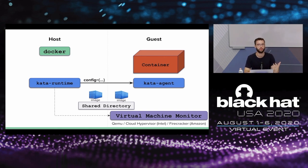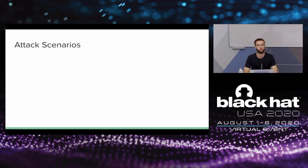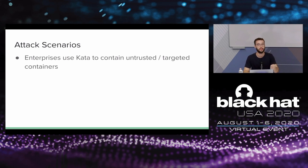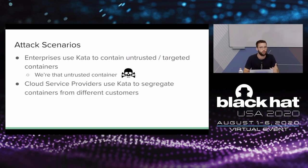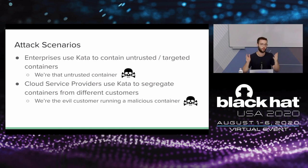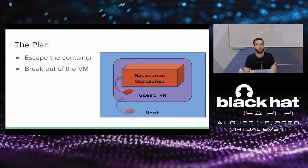Now that we know how things work, let's try to escape the sandbox. As a malicious container, what's the plan? We first need to escape the container and then break out of the virtual machine. I want to discuss scope: Kata is very configurable and the vulnerabilities I'll show won't work in every configuration, but we'll be targeting the standard default configuration. We'll also be focusing on a single container guest under Docker. And I want to say this is not an indictment against Kata — every software will have its share of vulnerabilities. I really want to show it so you can learn about container security.